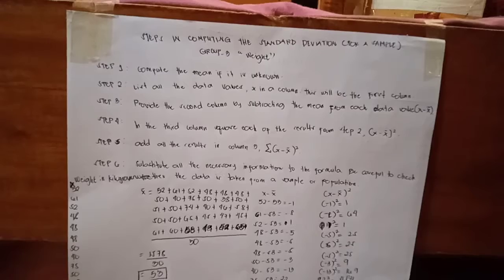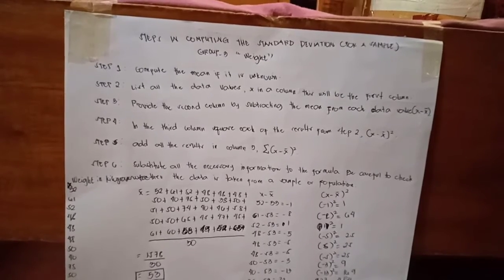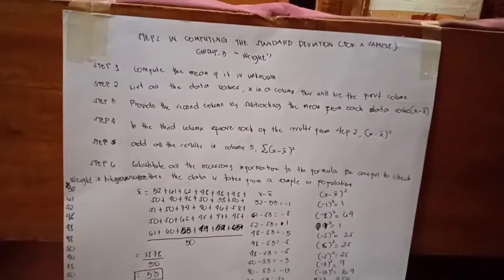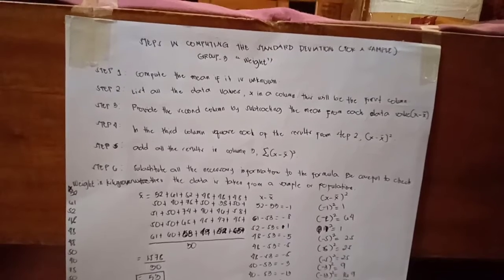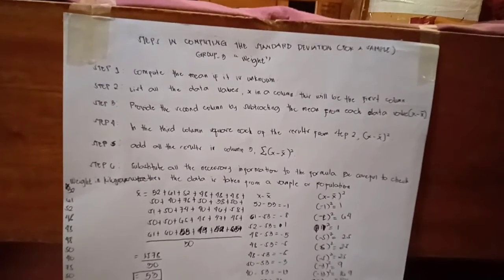For step 3, provide the second column by subtracting the mean from each data value. For step 4, in the third column, square each of the results from step 2.